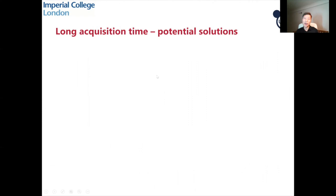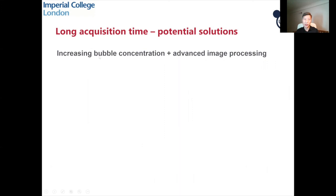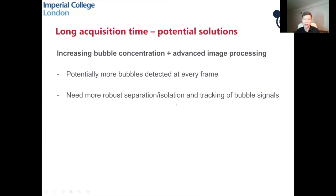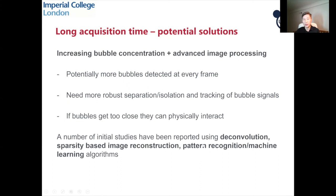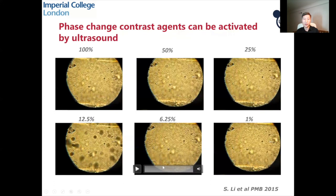For the long acquisition time challenge, one possibility is to increase bubble concentration and then use advanced image processing to handle that — potentially more bubbles detected per frame, requiring fewer frames and less time. But this needs more robust signal processing to separate, isolate, and track the bubble signal. If bubbles get too close, they can even physically interact, which is another challenge. Initial studies have used techniques like deconvolution, sparsity-based image reconstruction, pattern recognition, and machine learning algorithms to deal with higher concentration situations.